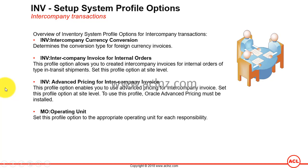So these are the important system profile options related to intercompany transactions — some specifically for internal orders. There are more profile options beyond these, and I would suggest you go into system profile options and look for others, exploring Oracle's standard documentation for further details.